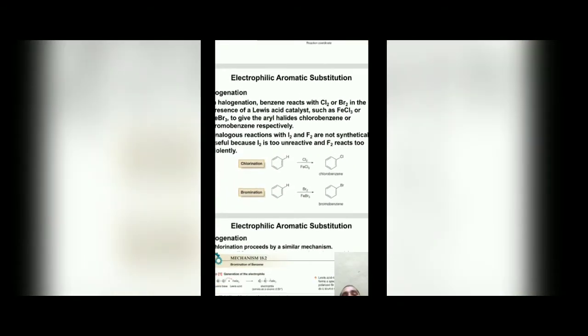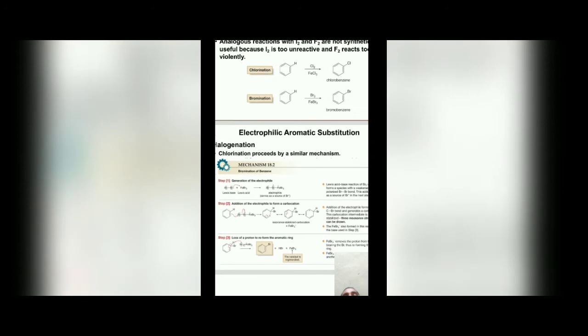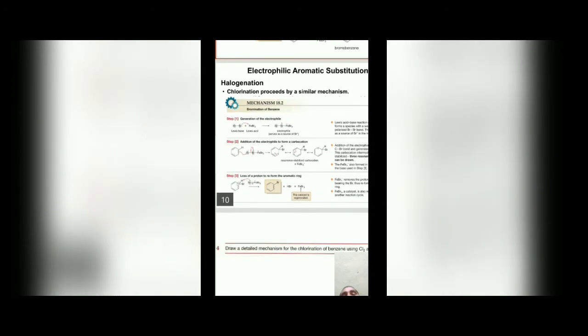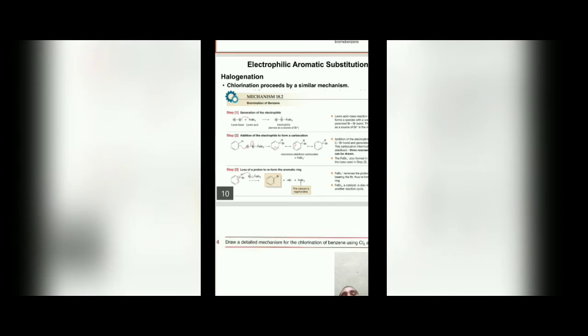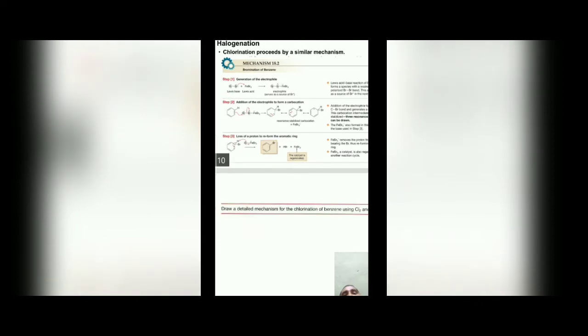For halogenation: benzene reacts with Cl2 in the presence of FeCl3 to give chlorobenzene; benzene reacts with Br2 in the presence of FeBr3 to give bromobenzene. In the mechanism, the first step is generation of the electrophile — FeBr3 (Lewis acid) reacts with Br2 (Lewis base) to give a bromine electrophile (Br+). This electrophile attacks benzene to give a carbocation, which is stabilized by resonance structures. Loss of a proton from the resonance hybrid gives bromobenzene. FeBr3 acts as a catalyst.